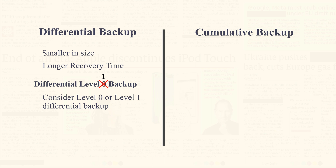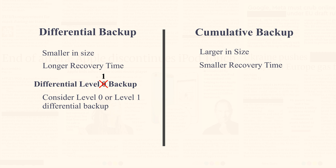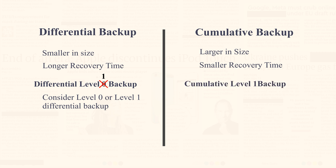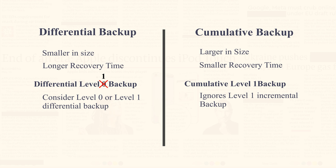Cumulative incremental backup is larger in size but takes less recovery time. Cumulative incremental level 1 backup completely ignores level 1 incremental backup and backs up all the data blocks that have changed since the last level 0 backup.